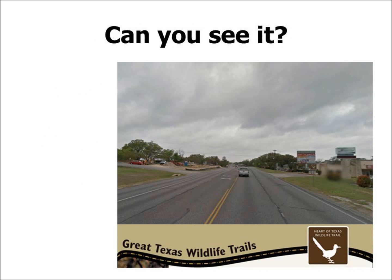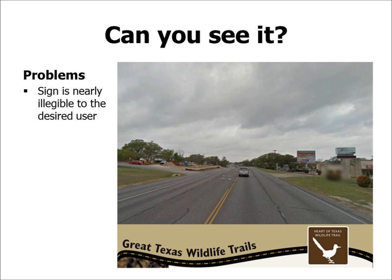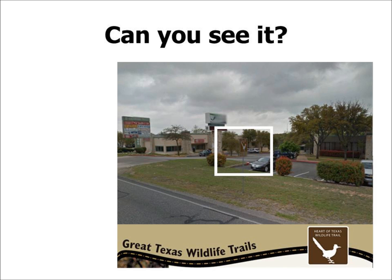This next slide illustrates a wayfinding marker that is nearly illegible to the desired user. The symbol and text size are too small, and the color doesn't stand out against the background. The placement is also problematic — we have a wildlife viewing trail location number corresponding to a map that TPWD sells, but there's no clear place for people to pull over. There's only a driveway for a local strip center at this location, and the brown color does not stand out against the cluttered background.